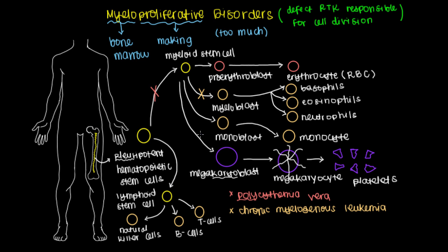Or let's say we have a defect in the platelet lineage around here. We can have a disorder that's known as essential thrombocytemia. And thrombocyte, I should have mentioned this earlier when I was writing out platelets, but thrombocyte means the same thing as platelets.